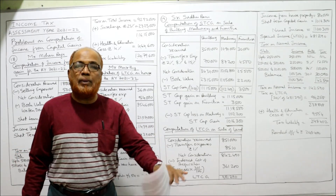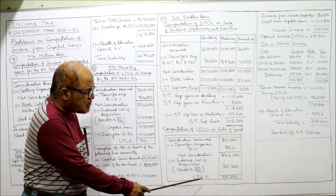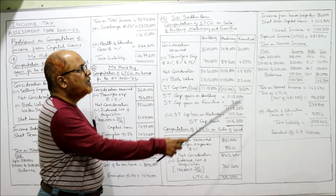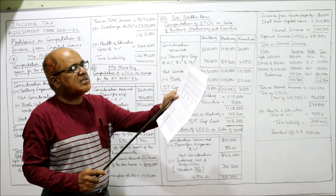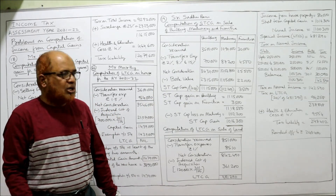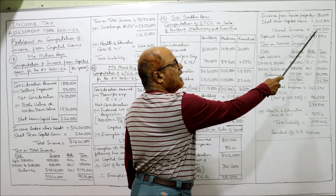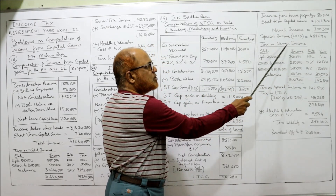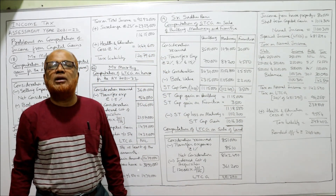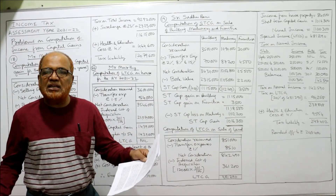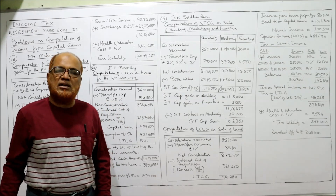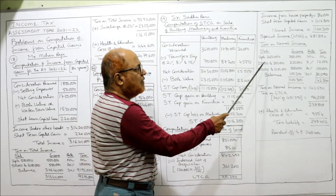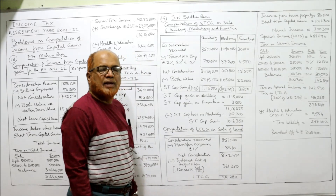This LTCG is taxed at a flat rate of 20% separately — it is called special income. Short-term capital gain is normal income taxed on the slab system. Income from house property: 84 thousand. Short-term capital gain: 10 lakh 16 thousand 300. Total normal income: 11 lakh 300. Special income — LTCG: 4 lakh 81 thousand 290. For tax on normal income: nothing is specified in the problem about age, so we assume below 60 years — basic exemption limit 2 lakh 50 thousand. Up to 2 lakh 50 thousand: nil.